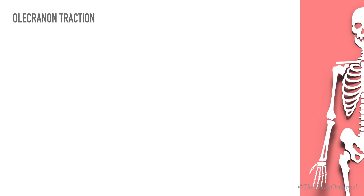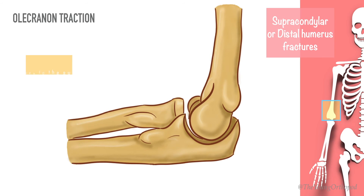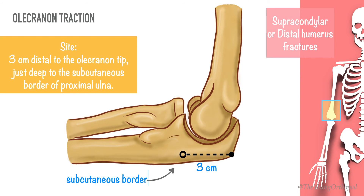The indications for olecranon traction include supracondylar or distal humerus fractures. The site of pin insertion is 3 centimeters distal to the tip of the olecranon, just deep to the subcutaneous border of the proximal end of the ulna. This avoids the pin from entering the elbow joint and also the open physis in children.